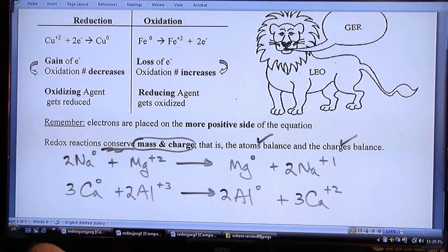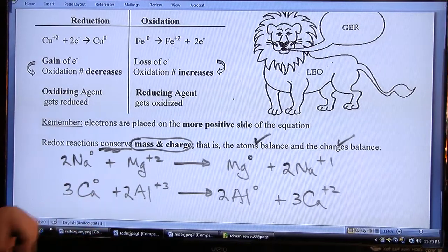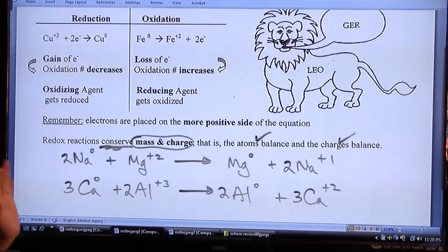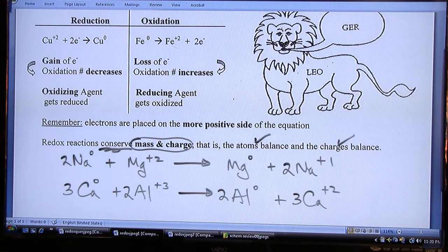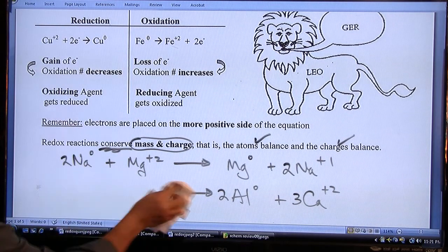And so your total charge on both sides, which is plus 6 in this example, and the total number of atoms, balance. Redox reactions conserve mass and charge.